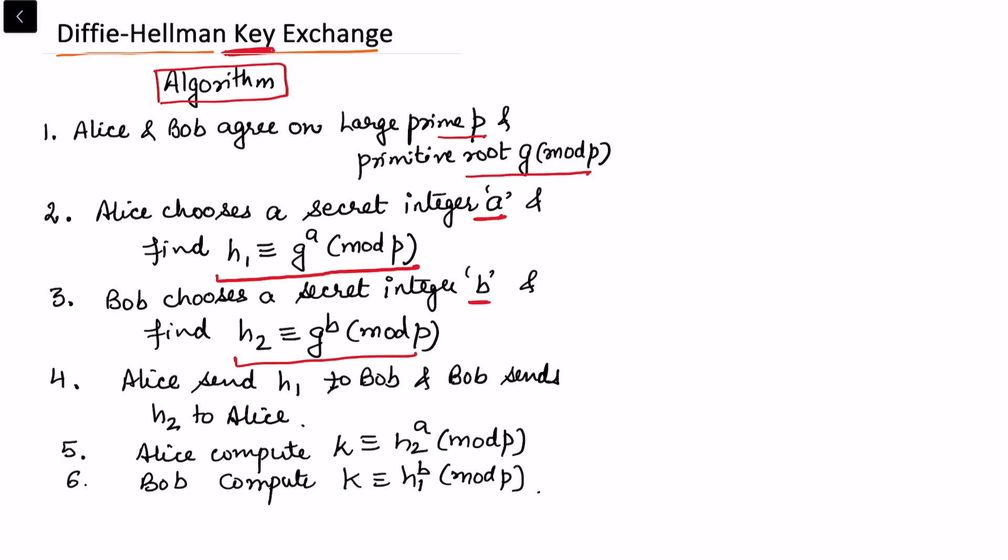They share h1 and h2. Alice computes k, which is h2 to the power a, since h2 has been shared. Bob computes k as h1 to the power b, and they get the same key.